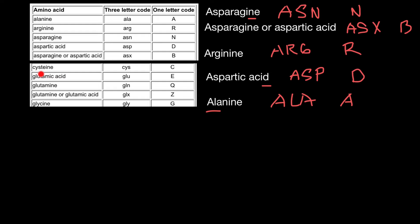Glutamic acid — the three-letter code takes the first three letters: GLU, just like in the name. By the way, there are only two amino acids whose names consist of two words: glutamic acid and aspartic acid. The one-letter abbreviation for glutamic acid is E. Notice that aspartic acid's one-letter code is D, and E is just the next letter in the alphabet. There are only two acidic amino acids — aspartic acid is first with D, and glutamic acid is second with E.